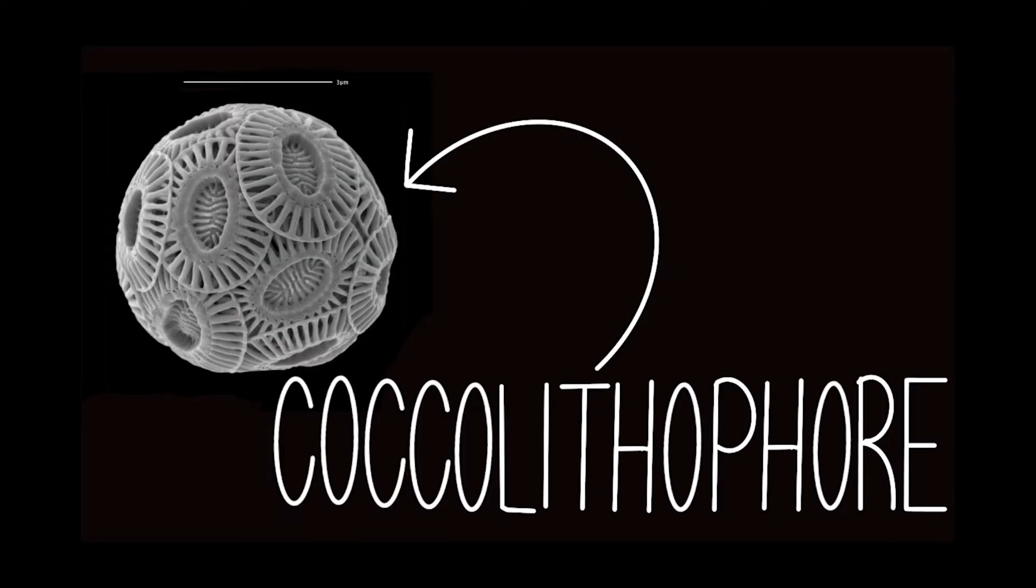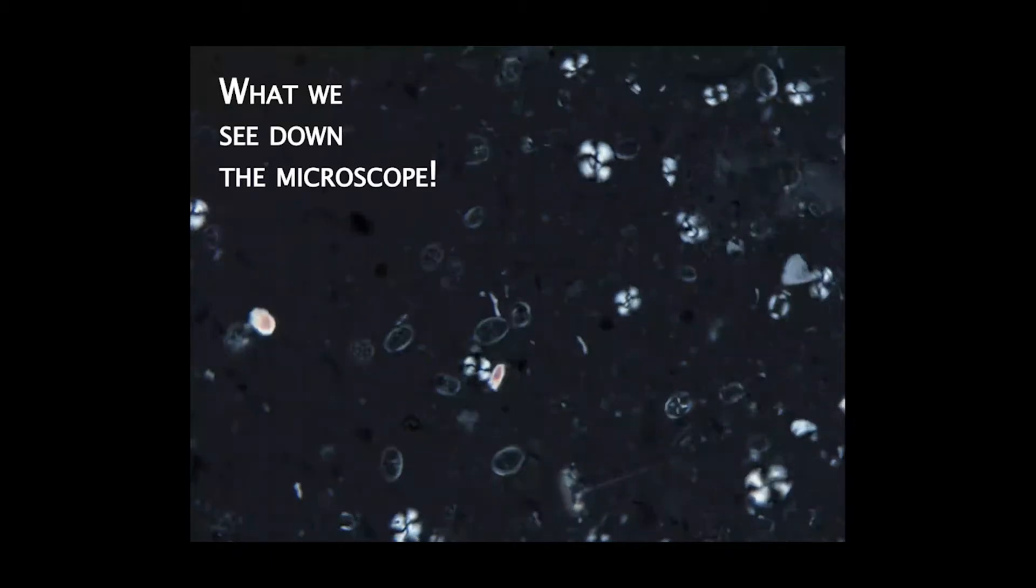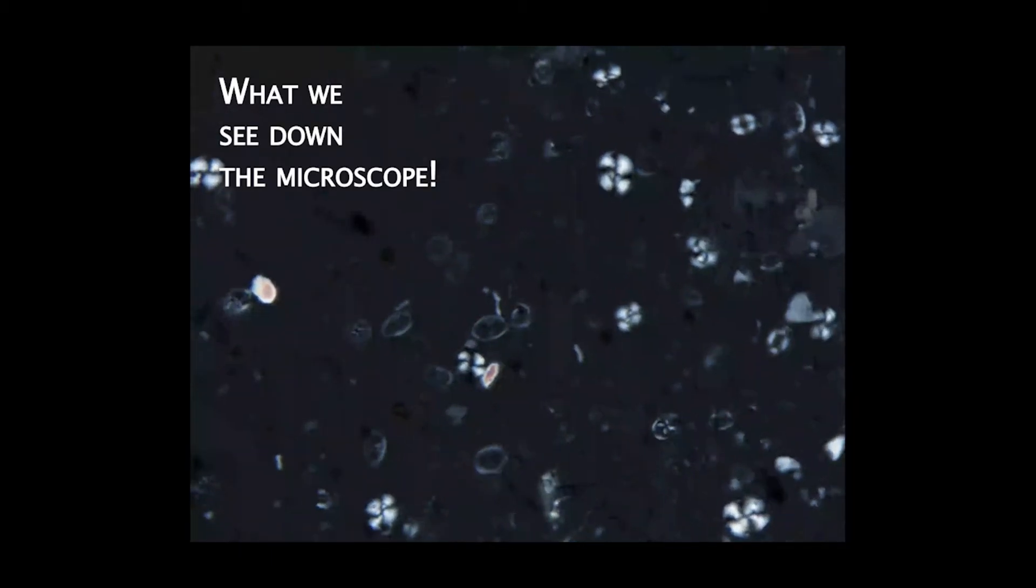These are called coccolithophores, and they are single-celled, plant-like organisms that live in the ocean. They've been around for a really long time, the first ones dating back to more than 200 million years ago.